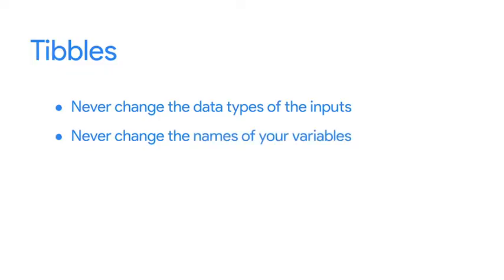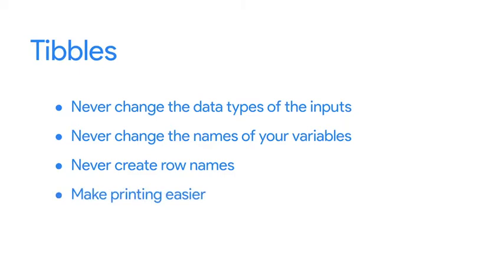Tibbles also never change the names of your variables, and they never create row names. Finally, tibbles make printing in R easier. They won't accidentally overload your console because they're automatically set to pull up only the first 10 rows and as many columns as fit on screen — super useful when you're working with large sets of data.